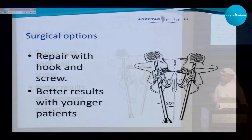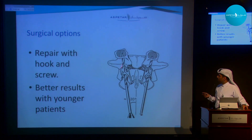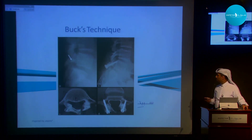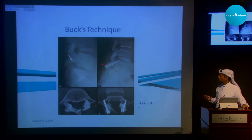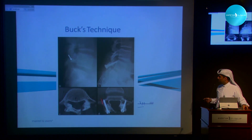One surgical option involves using a hook around the lamina and placing a screw across the fracture to cause compression — usually used for younger patients with good outcomes. The classical procedure described by Buck in the 1970s involves placing a screw across the pars to compress the fracture. Another cut shows where the fracture was and how it has healed.